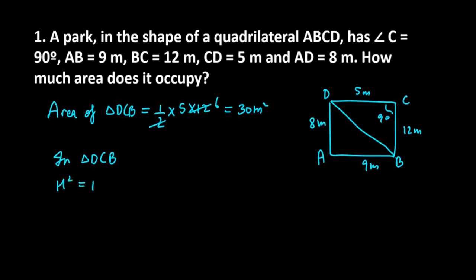In triangle DCB we can apply Pythagorean theorem. Hypotenuse squared equals perpendicular squared plus base squared. So h squared equals 12 squared plus 5 squared, which is 144 plus 25, which is 169. So h equals root 169, which gives 13 meters.